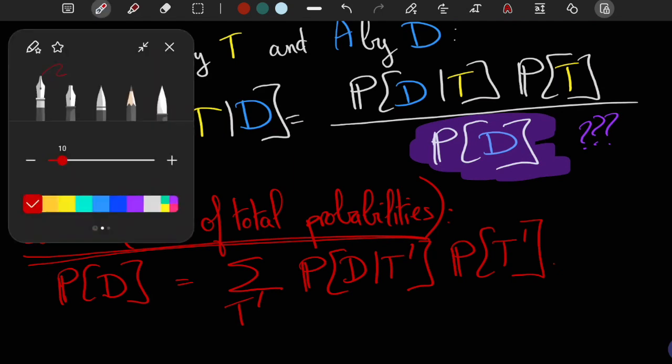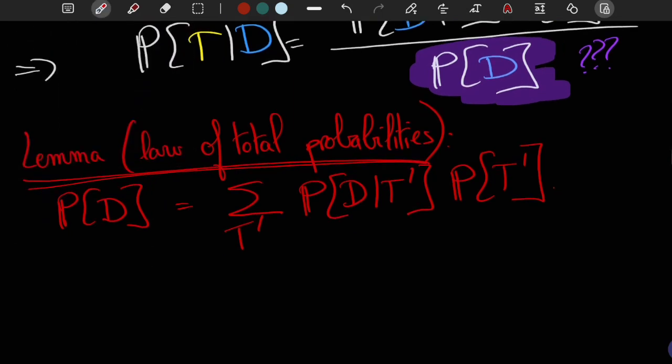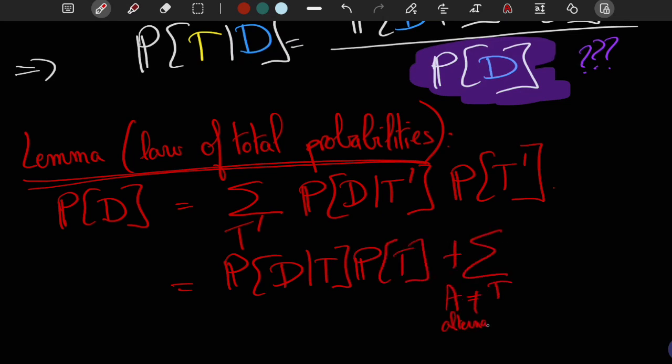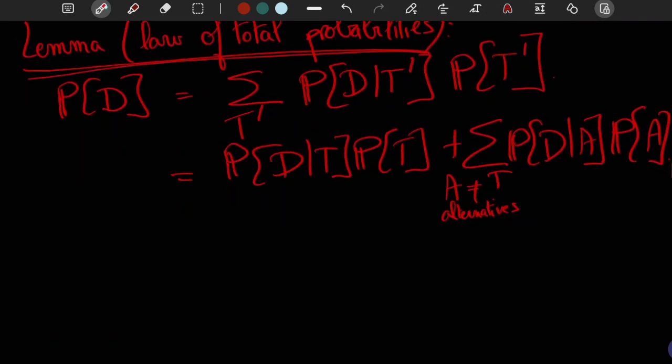this can be written as the probability of D equals to the probability of D given T times the probability of T, plus the sum over A different from T of the probability of D given A times the probability of A, where the A's can now be interpreted as the alternatives to theory T.